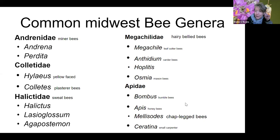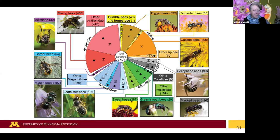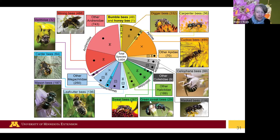Someone asked about the bee pie chart symbols. This is a PDF available on the Bee Lab website — we'll be sharing that link. The symbols indicate things like where bees nest: whether they nest in tunnels or underground, and whether they are social and aggregating in their nesting. There's a lot of information in that graphic, and if you want to dig further I encourage you to visit the Bee Lab website for all the details.